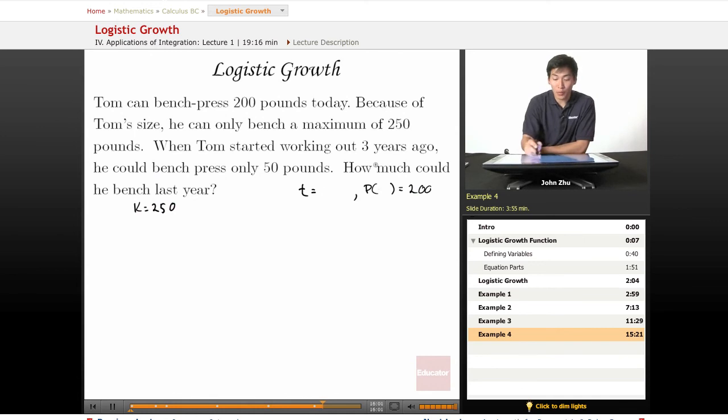When Tom started working out three years ago, so three years ago will be our initial condition. T equals zero, P of zero is going to equal 50 pounds.